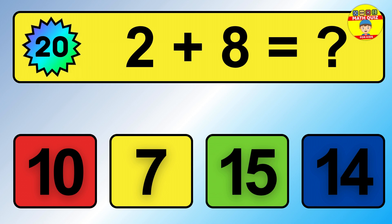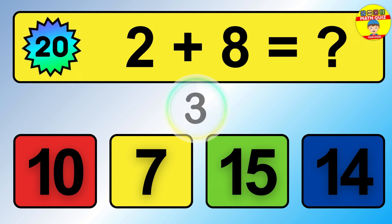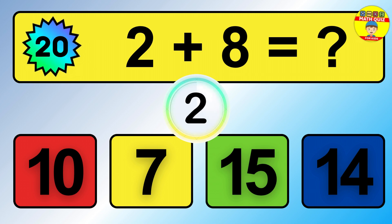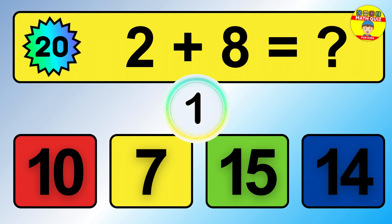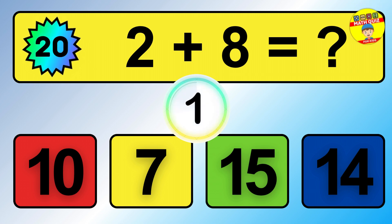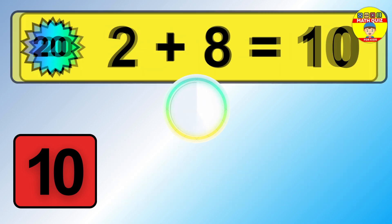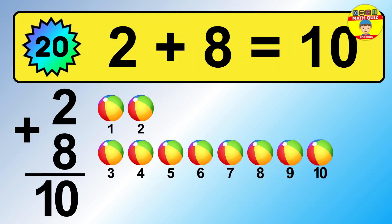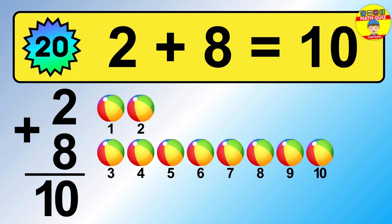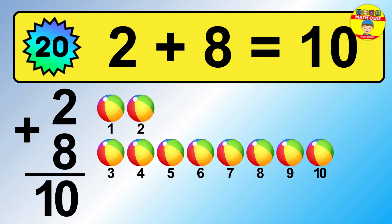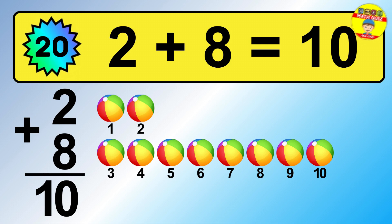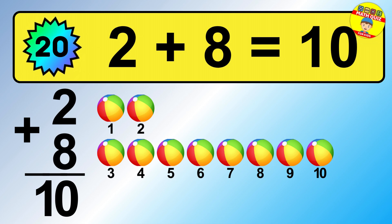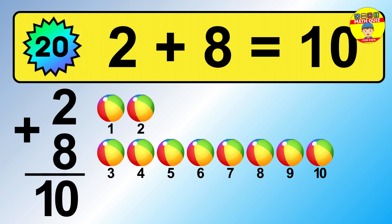Question 20. 2 plus 8 equals what? So the answer is 2 plus 8 is 10. Let's count it: 1, 2, 3, 4, 5, 6, 7, 8, 9, 10.